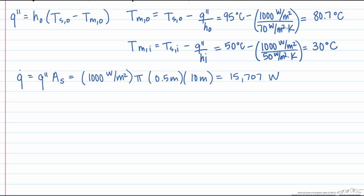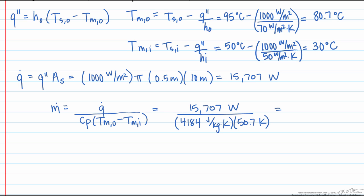Now we can put it into our equation to solve for the mass flow rate, which equals Q over our heat capacity times the difference in our mean temperatures. When we calculate those numbers, we end up with a mass flow rate of 0.074 kilograms per second.